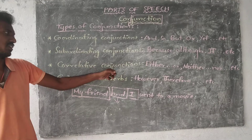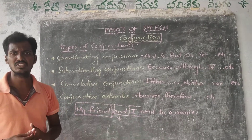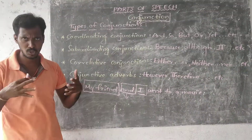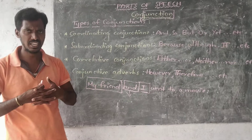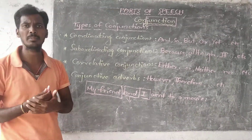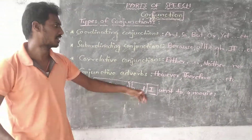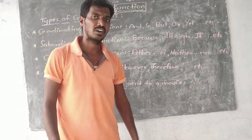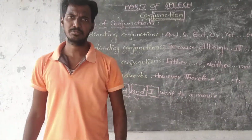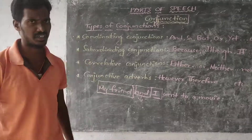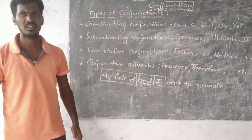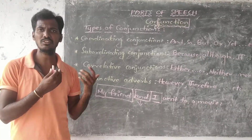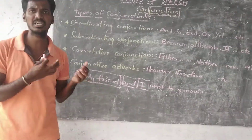Next, correlative conjunctions. Correlative conjunctions come in pairs, such as: either/or, neither/nor, not only/but also. For example: I play not only cricket, but also chess.